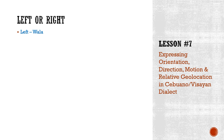When you say left, it's just wala. And how do you say right? Tu'o. So when you say left: wala. Or right: tu'o. Sa wala or sa tu'o — to the left or to the right.